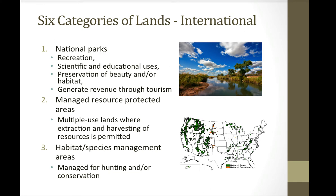The third category of international lands are habitat or species management areas. These sound like they'd be great for wildlife, and often are used for conservation, but some are also used to manage populations for hunting. For example, some areas are set aside as duck habitat for people who like to hunt ducks.